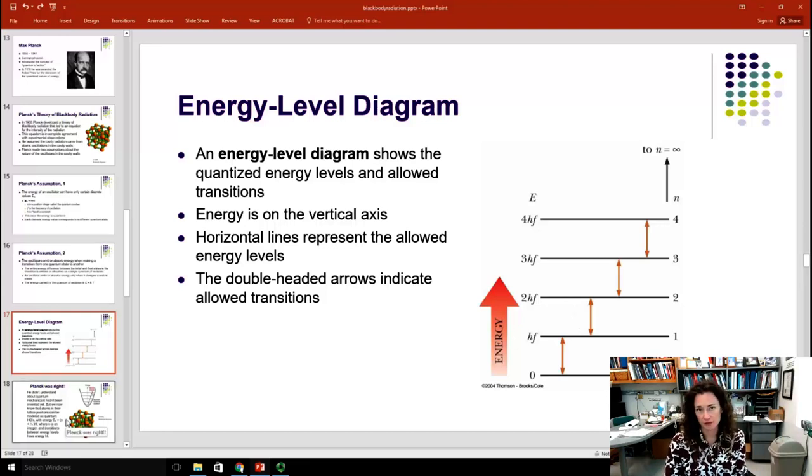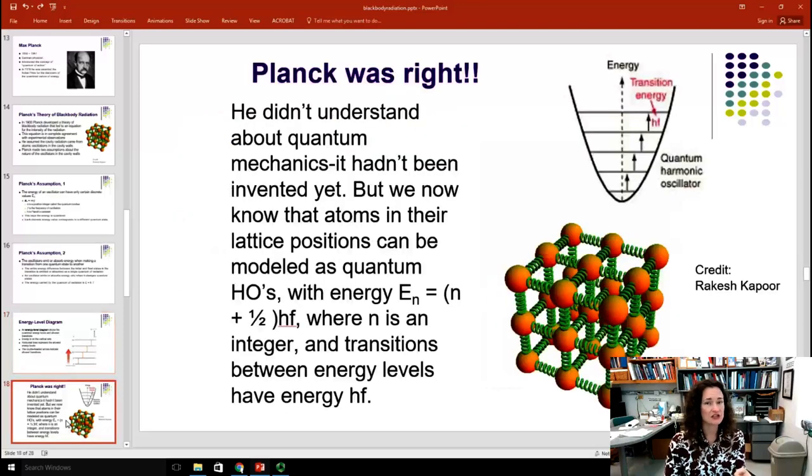Now, this was Planck's model. And he turned out to be totally and completely right. He didn't understand quantum mechanics. It hadn't even been invented yet. Quantum mechanics wasn't invented until the 1920s and 1930s. He did this in 1900, before quantum mechanics came about, before the idea of a discretization of energy was sort of embraced by the physics community.